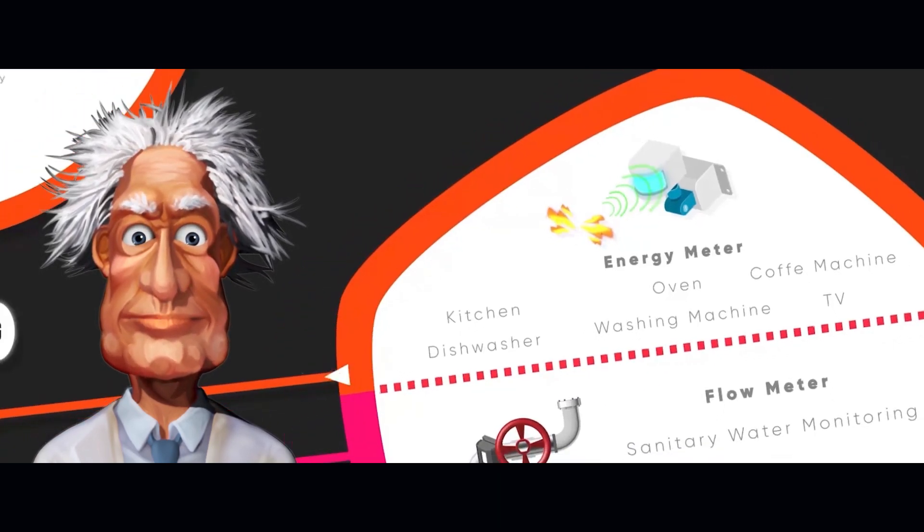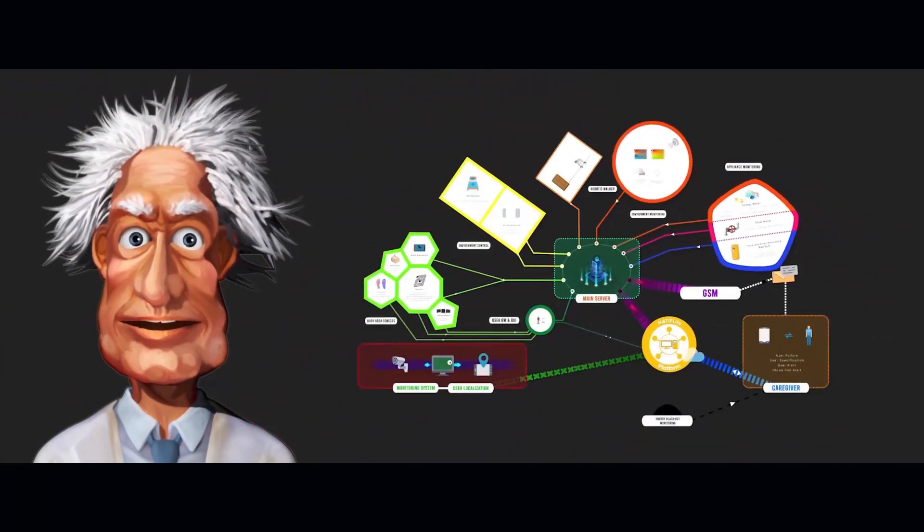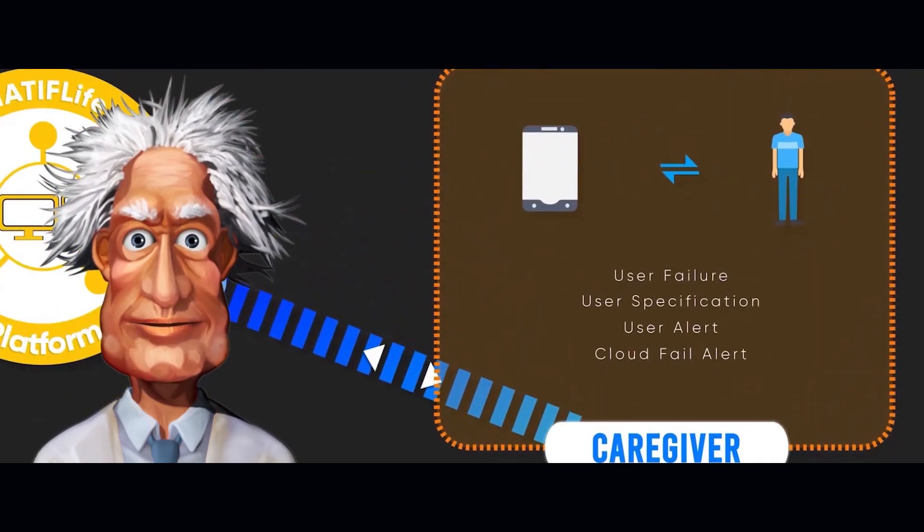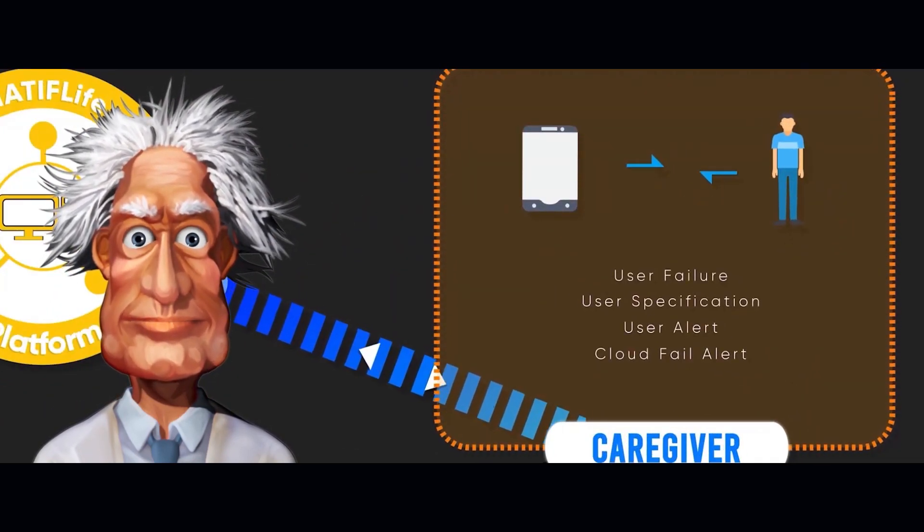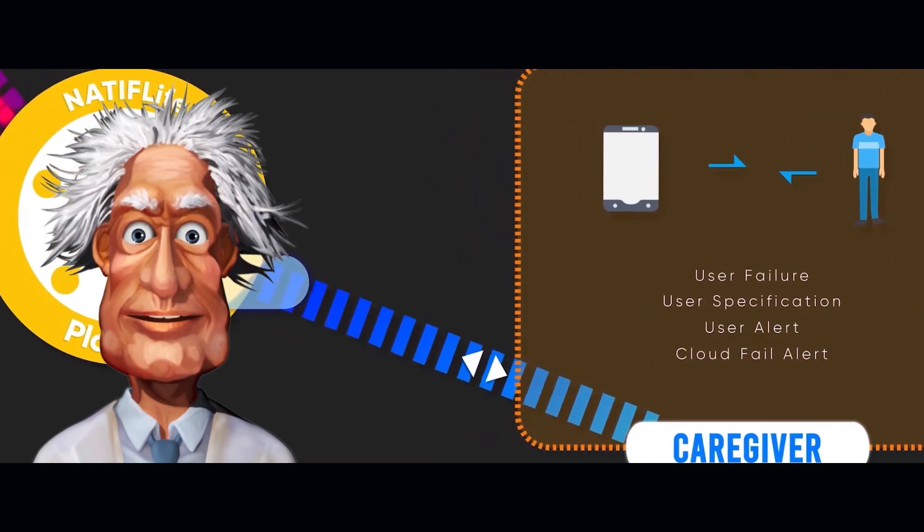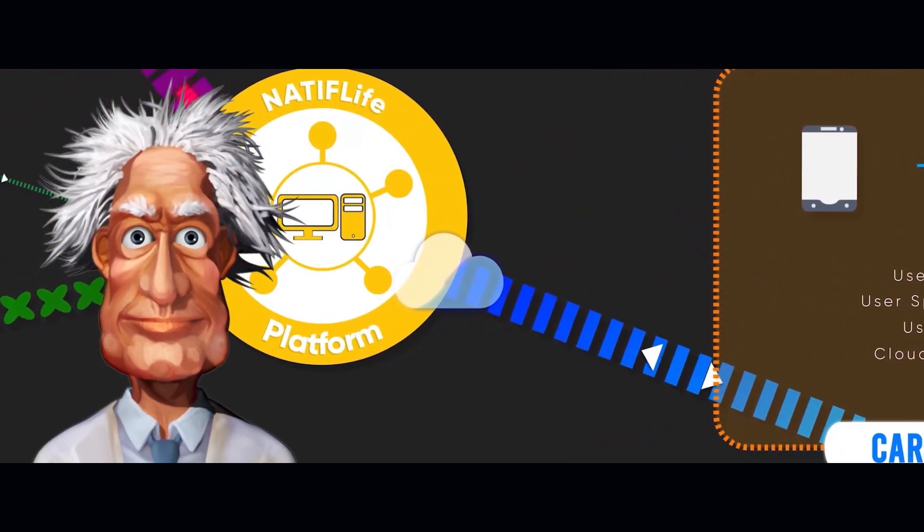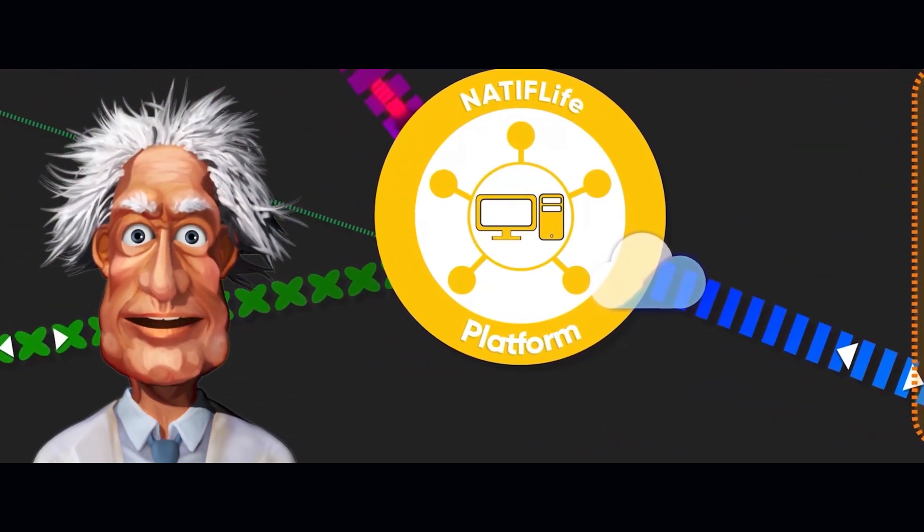The notifications related to user errors, such as alarms, information messages, and cloud problems, are sent to the caregiver's smartphone and are communicated to the cloud platform.